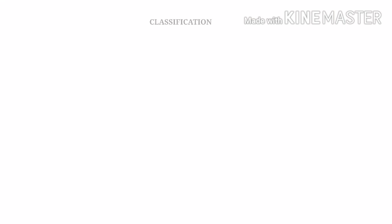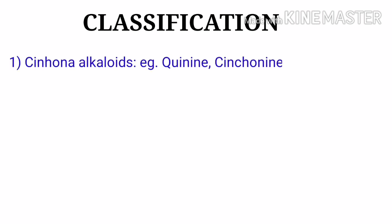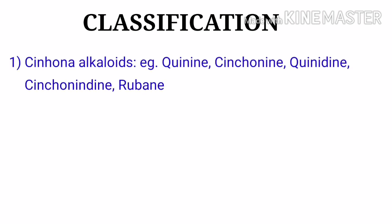Now we will see the classification of anti-malarials. Chemically it is classified into 10 types. The first one is cinchona alkaloids. Examples are quinine, quinidine, cinchonine, cinchonidine, and rubane.